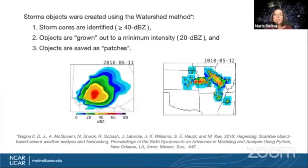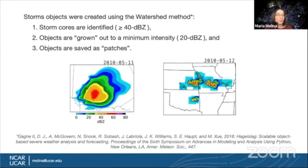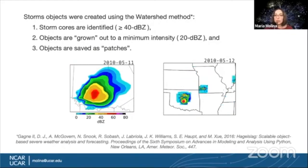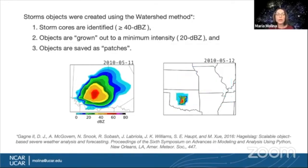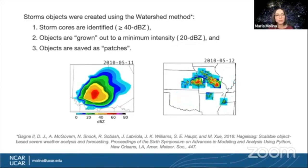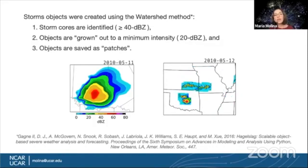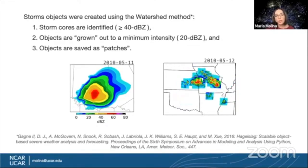Storm objects were extracted from both climate simulations using the watershed method, which consists of three steps. First, storm cores are identified — we use 40 dBZ as our maximum threshold, a quantity derived from simulated radar that provides an estimate for precipitation intensity. Then we grow out these objects to a minimum intensity of 20 dBZ, and we save these objects as patches that contain surrounding information about the storm, which we assume to be influential for their upcoming classification.